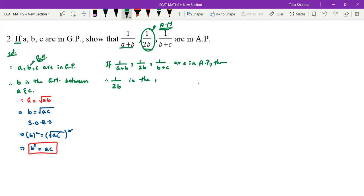1/2B is the AM between 1/(A+B) and 1/(B+C). This can be done using the difference method: T2 minus T1 equals T3 minus T2.